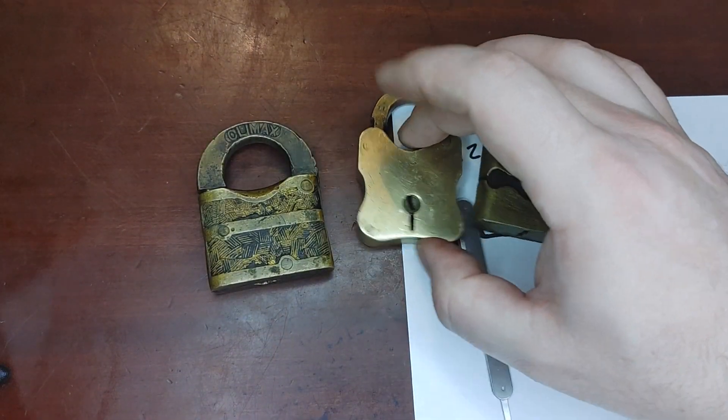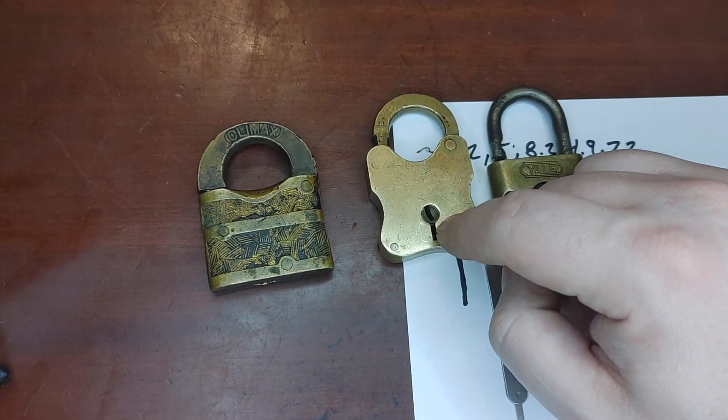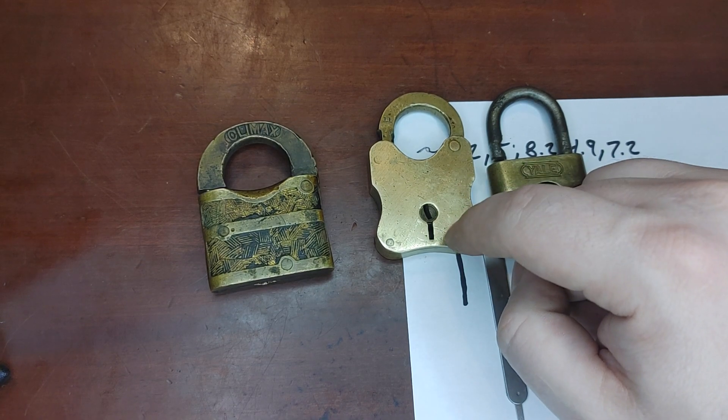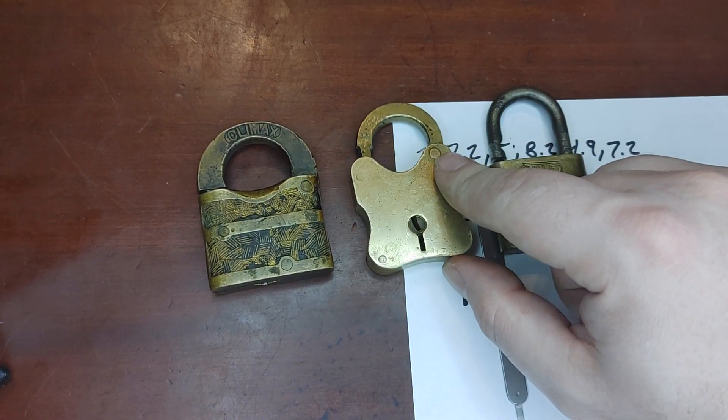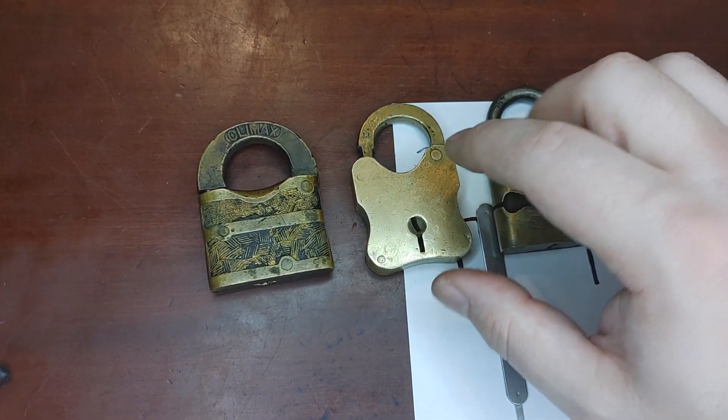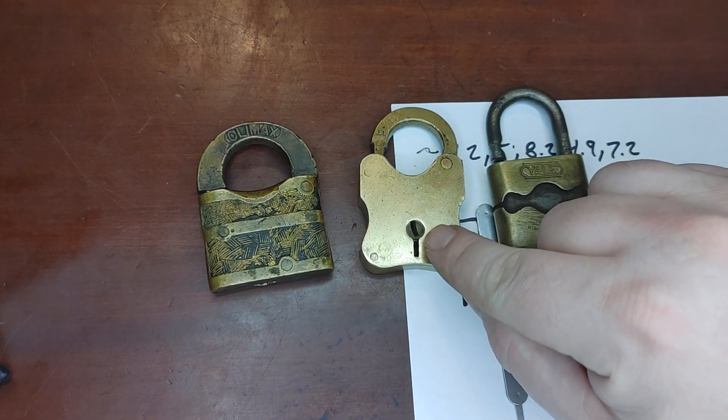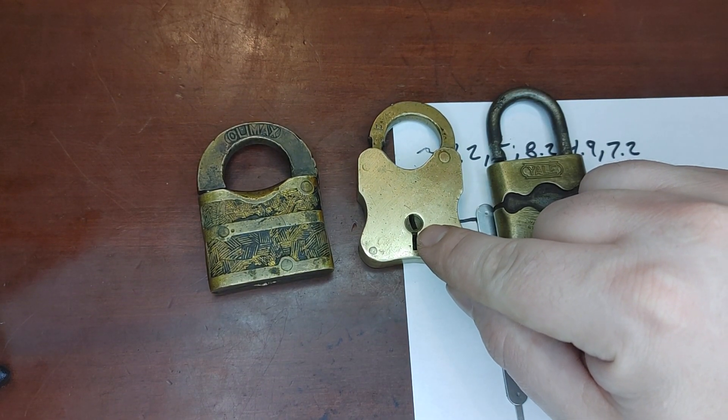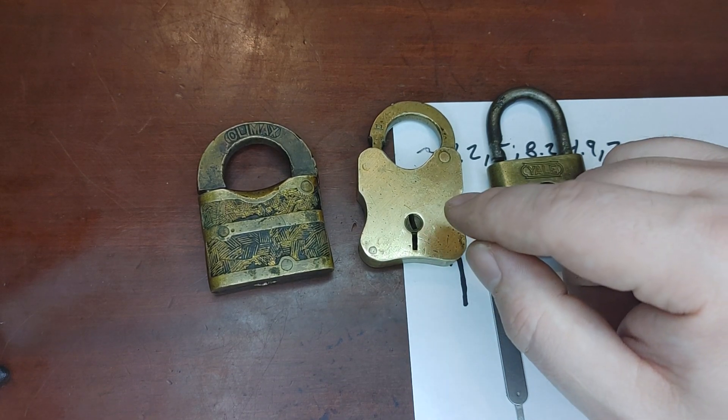For these two, I would probably look online for a key for this, for something similar that I could either that would work like COTS, or that I could file to make work. But because it's so narrow, I wouldn't want to necessarily 3D print something for this. I think there's a good chance it would snap.